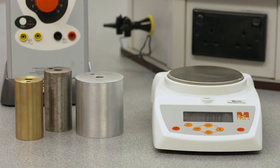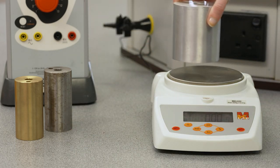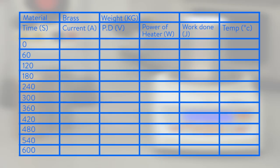Weigh the first of the calorimeter blocks on the balance and make a note of the weight in kilograms in a suitable table. You'll also need to include a column for temperature change, current from the ammeter reading and voltage from the voltmeter. The table should look something like this.